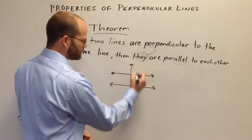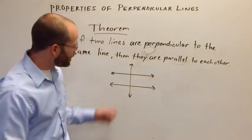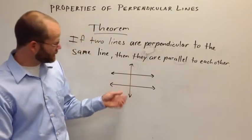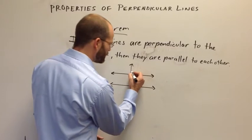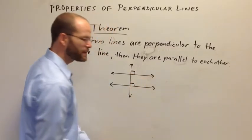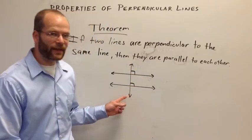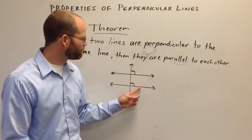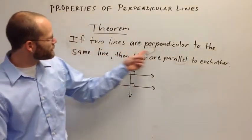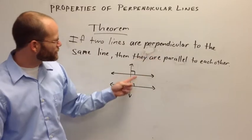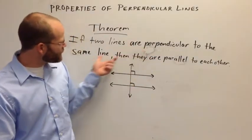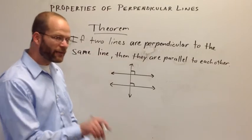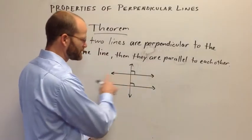So we cannot conclude yet that these lines are parallel. Draw the third line here. Also at this point we can't conclude that this line is perpendicular to either of these. But suppose I give you the following information. Suppose I tell you that this third line is in fact perpendicular to both of these lines. The theorem says if two lines are perpendicular to the same line, then they are parallel to each other. That's what we find here. We find that the hypothesis is true. And so therefore we can conclude that these two lines are parallel.